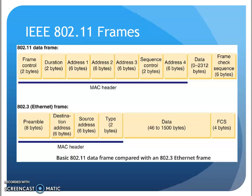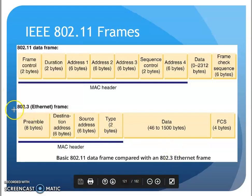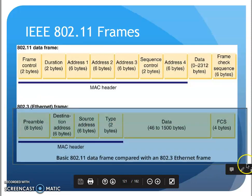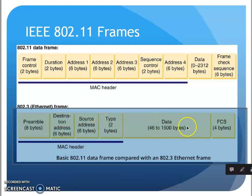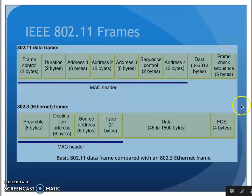As I look at the 802.11 frame versus the 802.3 Ethernet frame — this right here we should remember from previous. This was our Ethernet frame and its header fields: preamble, destination address, source address, type, data, and the frame check sequence or trailer. Those are the frame fields we looked at previously.